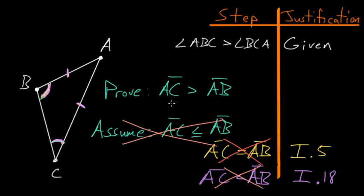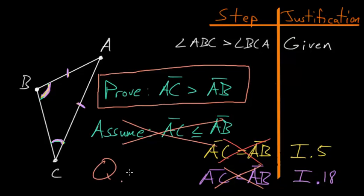And since AC cannot be less than or equal to AB, we've shown that it must be bigger than AB, which is exactly what we sought to prove, so we can end with QED.